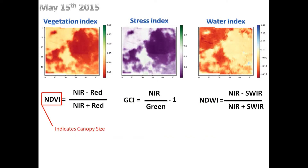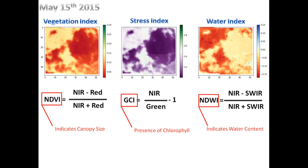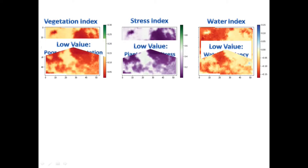We evaluated three indexes: Normalized Difference Vegetation Index (NDVI), Green Chlorophyll Index (GCI), and Normalized Difference Water Index (NDWI). A low value on NDVI means lack of or poor vegetation. For GCI it means plant stress, and for NDWI it means water deficiency in the farm.